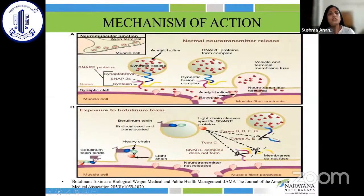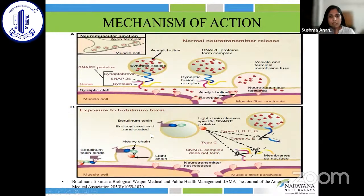This is the mechanism of action. In panel A, you can see the normal sequence of events at the nerve-muscle junction in the absence of botulinum toxin — exocytosis of neurotransmitters depolarizes the muscular membrane and muscle contraction takes place. When exposed to botulinum toxin type A, the light chain is endocytosed and translocated with the help of the heavy chain, cleaves the specific SNARE proteins, the SNARE complex is not formed, membranes do not fuse, there is no release of neurotransmitter, and hence the muscle fiber is paralyzed.